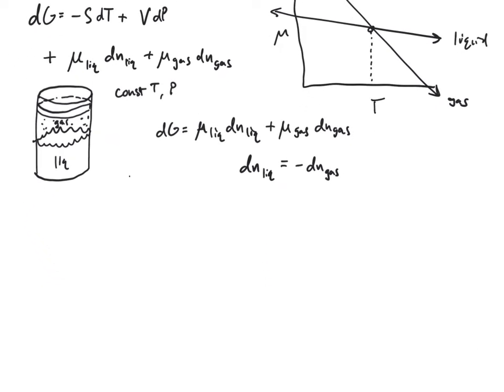So if I make a little plot here, down here I might have the number of moles of gas, and over here I have the Gibbs free energy of the system. If the system is in equilibrium, that means it's existing down at a minimum somewhere of the Gibbs free energy.